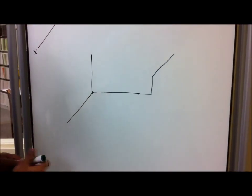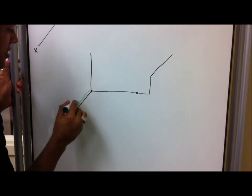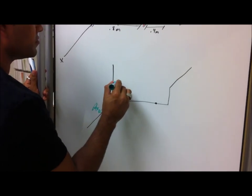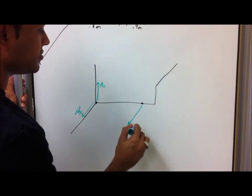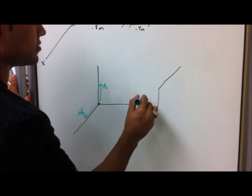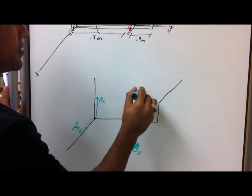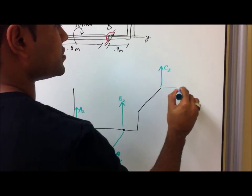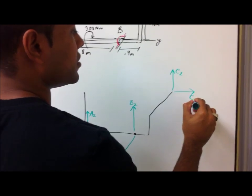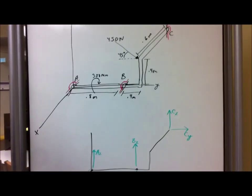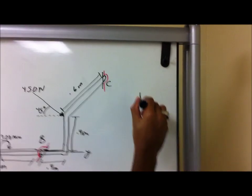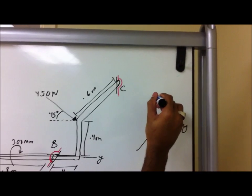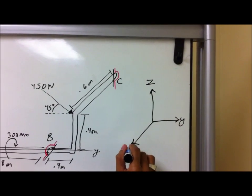So now what we'll have is this force in this direction, A-X. We're going to have a force in this direction, A-Z. Force in this direction, B-X. Force in this direction, B-Z. We're going to have a force in this direction, C-Z. Now, what is your reference based on? Y. Anything in this direction is positive Y, anything in this direction is positive Z, and anything in this direction is positive X.